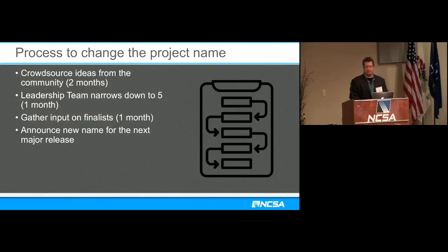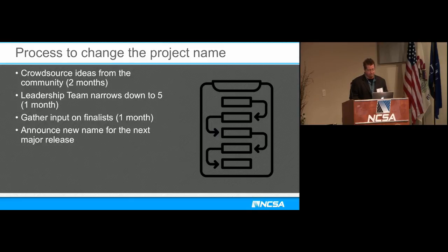The leadership team will ultimately decide and pick the final name, and there's a lot that goes into this — can we get the domain name, can we afford it, are there trademark issues? That's why we can't give a final timeline. Expect the survey to come out after BroCon. We'll be doing the name change not until the next major release — so if we do a 2.5.2, we're not doing it for that. Feel free to talk to me or anyone from the leadership team. The full list is in the footer of our homepage under 'team' — feel free to give us your ideas.